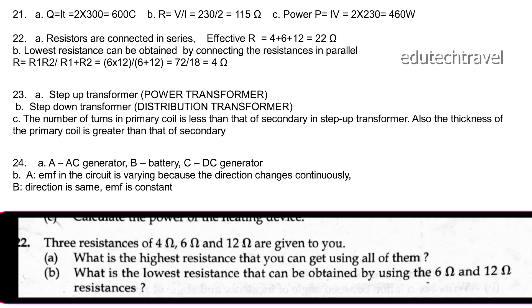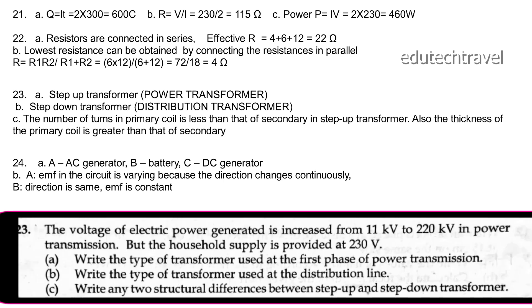Three resistances of 4, 6, and 12 ohm are given. The highest resistance is obtained when they are connected in series: 4 + 6 + 12 = 22 ohm. The least resistance is obtained when connected in parallel. For 6 and 12 ohm in parallel: 1/6 + 1/12 gives an effective resistance of 4 ohm.